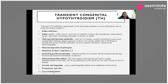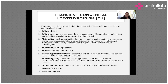Transient causes include iodine deficiency or iodine excess from antiseptics, drugs like amiodarone, or radiocontrast agents. Maternal TSHR blocking antibodies (trap antibodies) can cause transient hypothyroidism lasting three to six months. On scintigraphy, the antibodies may block uptake so no gland is seen, but the gland will be visible on normal ultrasound.